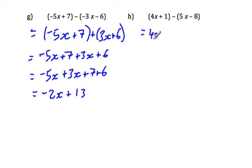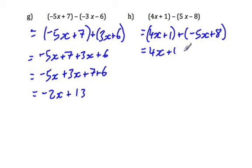So we write this as 4x in brackets plus 1 plus negative 5x plus 8. Now we drop the brackets, so it's 4x plus 1 plus, and negative 5x, or we could write minus 5x plus 8.